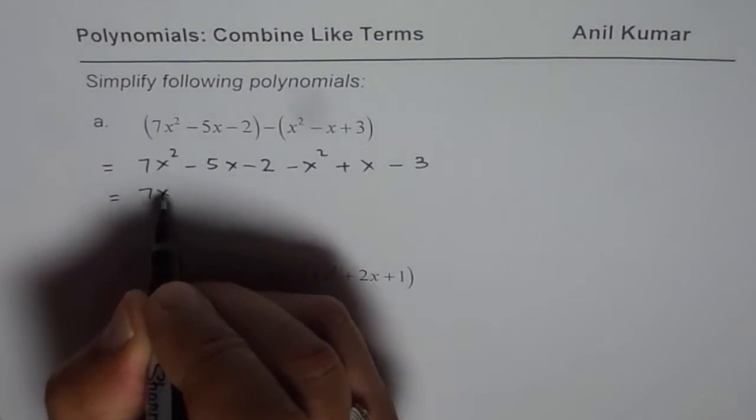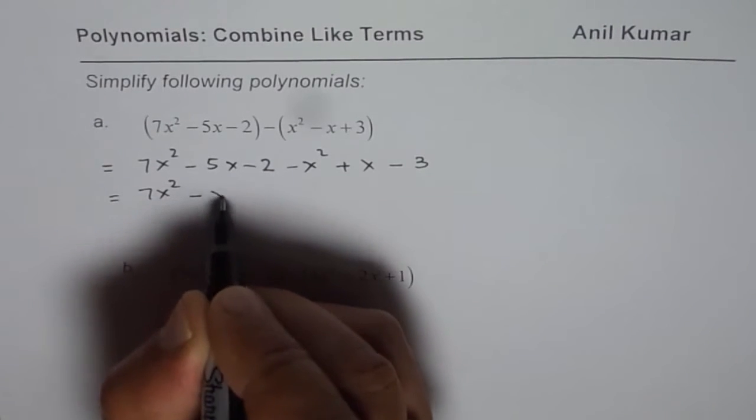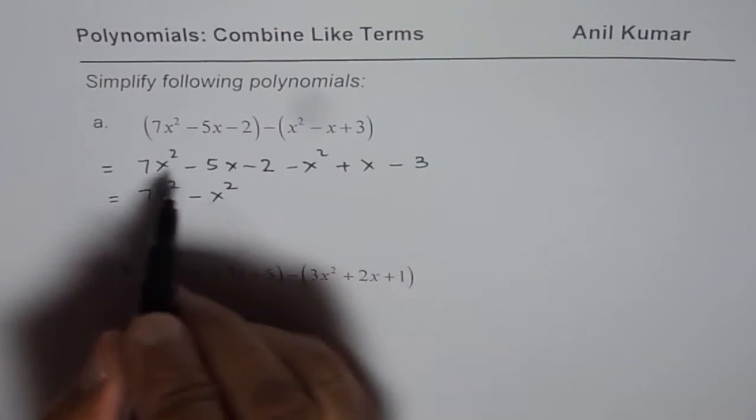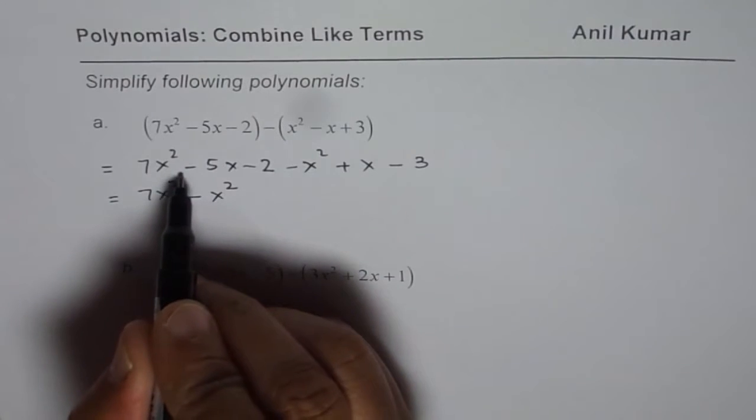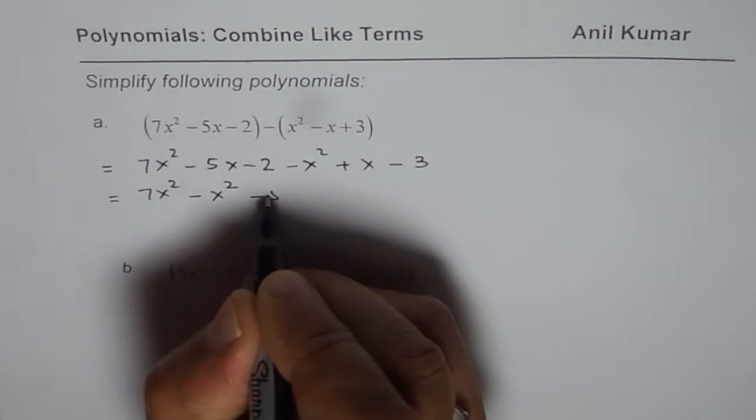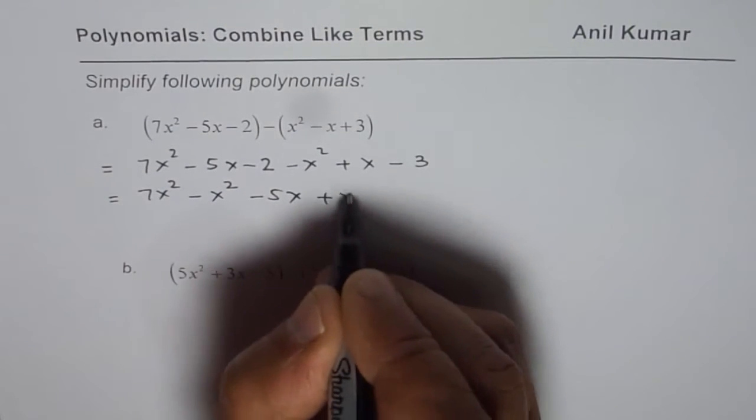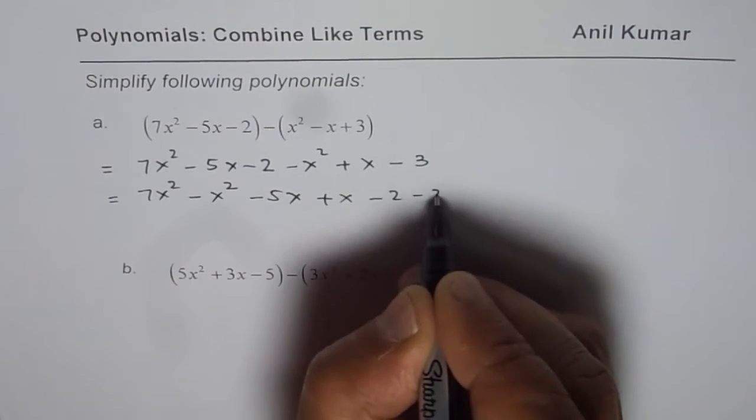Before combining let me write them together so that it becomes clear to you. So I brought minus x squared to the left side. Then we have minus 5x, like term is plus x. Numbers are minus 2 and minus 3.